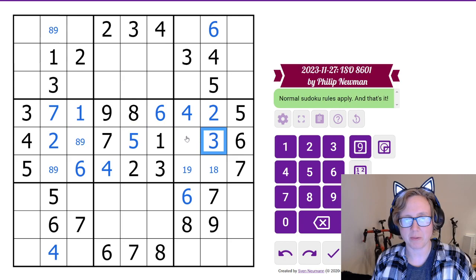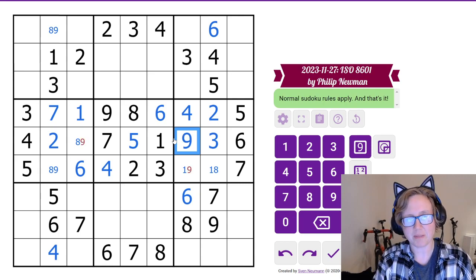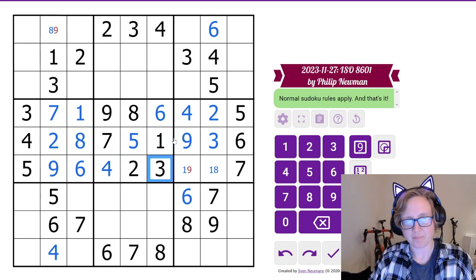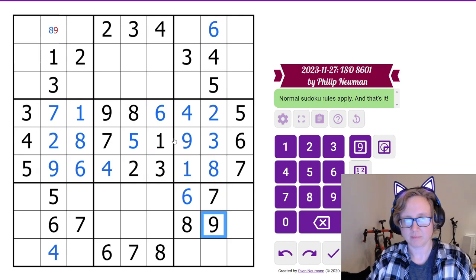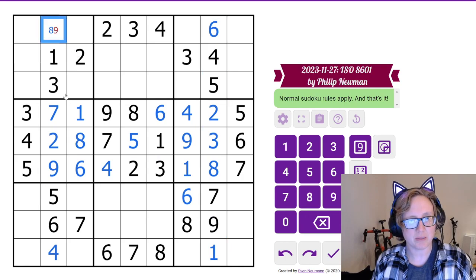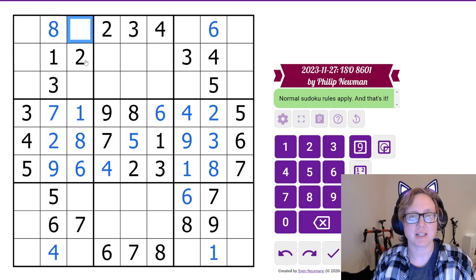We need a 3 in this row, and there's only one position where it can go. We also need an 8 and a 9, and this can only be the 9, and that is the 8. Now that's a 1, because that's our last digit in this column, and this is going to be an 8, because that's our last digit in this column.